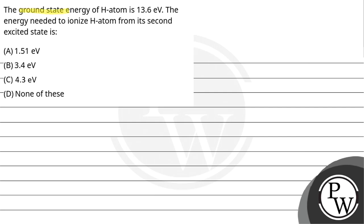Let's read the question. The ground state energy of hydrogen atom is 13.6 electron volt. The energy needed to ionize hydrogen atom from its second excited state is: option A, 1.51 electron volt; option B, 3.4 electron volt; option C, 4.3 electron volt; and option D, none of these.